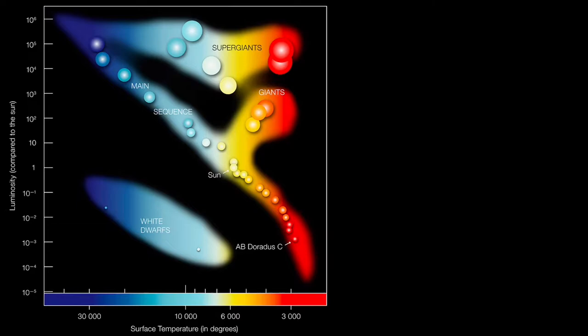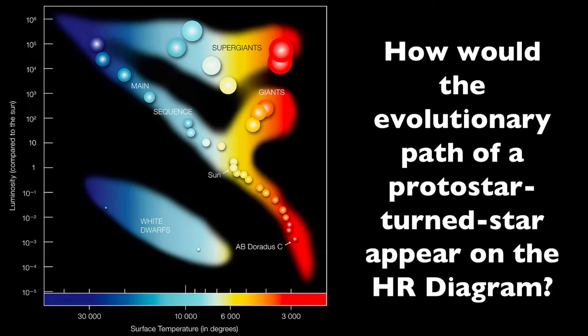Stars of various types can be plotted on an HR diagram and categorized based on characteristics like temperature and luminosity as supergiants, main sequence stars, or white dwarfs. But what about newborn stars, the stars that have just become stars? How would their evolutionary path appear on the HR diagram?